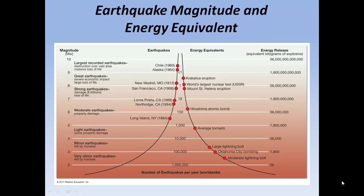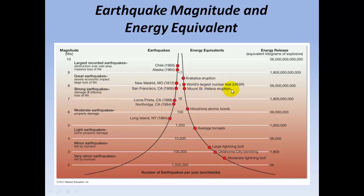So a magnitude 2 is 32 times as energetic as a magnitude 1. Looking at a chart of magnitude versus energy equivalent: a magnitude 2 is not much energy; a magnitude 3 on the Richter scale is equivalent in energy to the Oklahoma City bombing; a magnitude 5 might be just a little stronger than the average tornado; a magnitude 6 is moderately damaging and just a little weaker than the Hiroshima atomic bomb. You may have heard of the Northridge, California quake in 1994. A strong earthquake like San Francisco in 1906 is equivalent to the Mount St. Helens eruption, which was a very violent volcanic eruption in 1980.